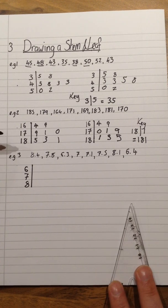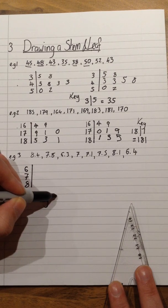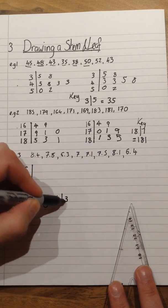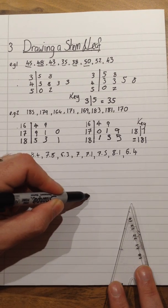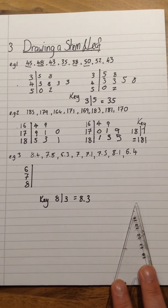This time, I'm actually going to quickly draw the key first, because on this one, I'm going to say that 8 line, and then any number, doesn't even have to appear on the diagram, and 3 would represent the number 8.3. This will just make sure I remember what I'm putting on as my leaf.